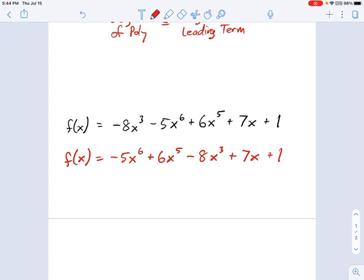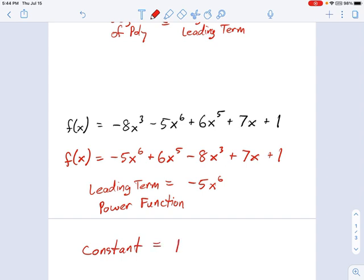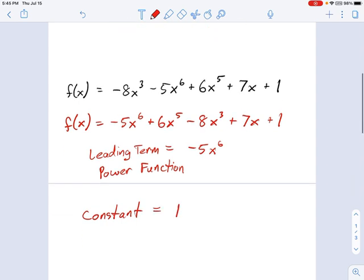We now have this polynomial in standard form, and we can start saying things about it. So let's start with the leading term. Leading term is negative 5x to the 6th. It's just whichever term has the biggest exponent. And remember, this is also called the power function. We'll be using power functions a lot in this unit. The constant, right, that's the one with no x attached to it, that's just the number 1. And what's the degree of this polynomial? Right, we see a lot of degrees here, there's exponents all over the place, but the highest exponent is 6. So we say that this polynomial is a degree 6.